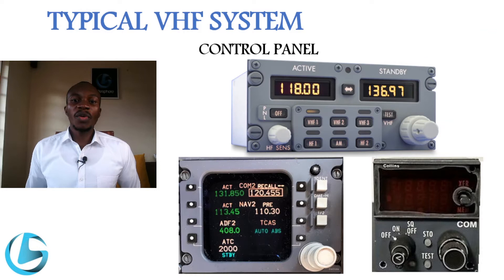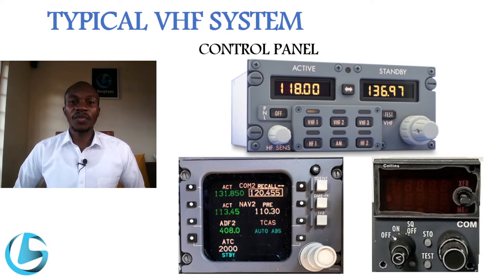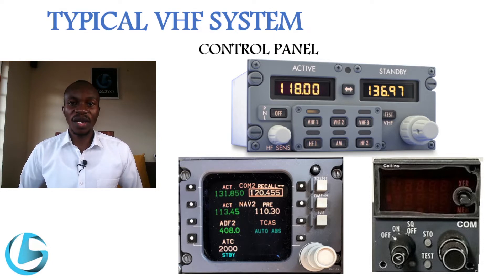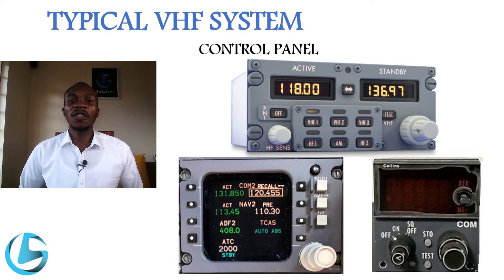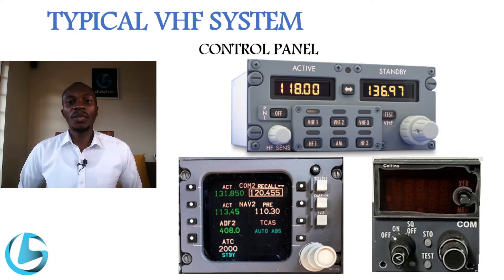The second component on a VHF communication system is the control panel. The control panel is found in the cockpit of an aircraft — it can be on the main instrument panel, on the pedestal, or on some aircraft, on the overhead panel. Its functions are to enable switching on and off of the respective VHF system.